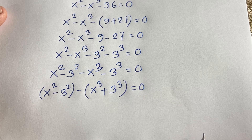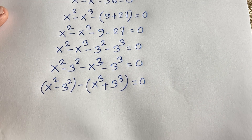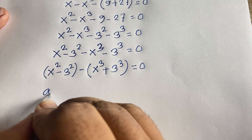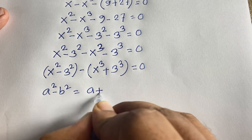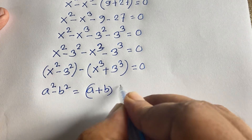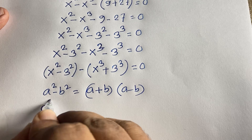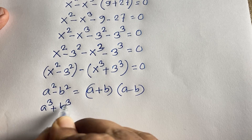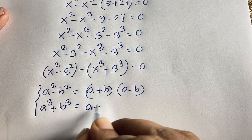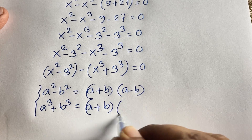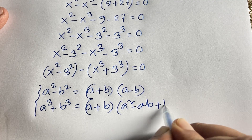We can identify here the forms a squared minus b squared and a cubed plus b cubed. The identity for a squared minus b squared is (a + b)(a − b), and the identity for a cubed plus b cubed is (a + b)(a squared minus ab plus b squared).